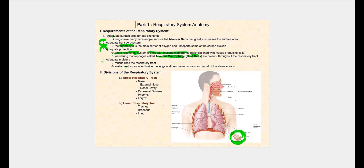The fourth requirement is adequate moisture, and that moisture is provided by mucus. Our respiratory tract has a thin layer of mucus that provides this moisture. In addition to mucus, we have a very important fluid produced within the lung called surfactant. We will talk about the importance of surfactant when we look at the physiology of the respiratory system. This surfactant will allow the lungs to expand and recoil each and every time we breathe in and breathe out.